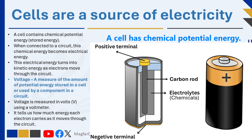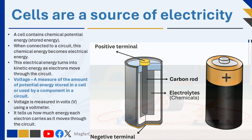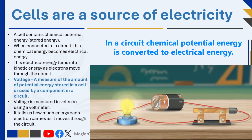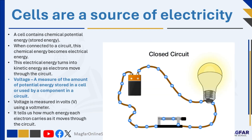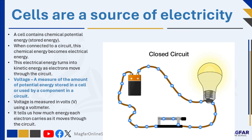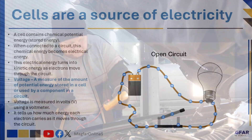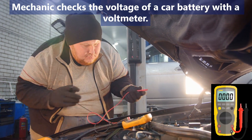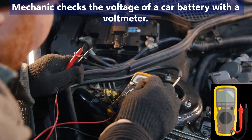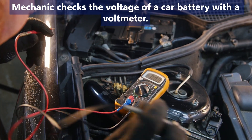A cell contains chemicals with stored energy, called chemical potential energy. When a cell is connected to an electric circuit, this chemical energy is changed first into electrical energy and then into kinetic energy, as charges or electrons move through the circuit. The ability of a cell to push electrons through a circuit is called its voltage, measured in volts (V). Voltage tells us how much energy a cell provides to each electron moving through the circuit.